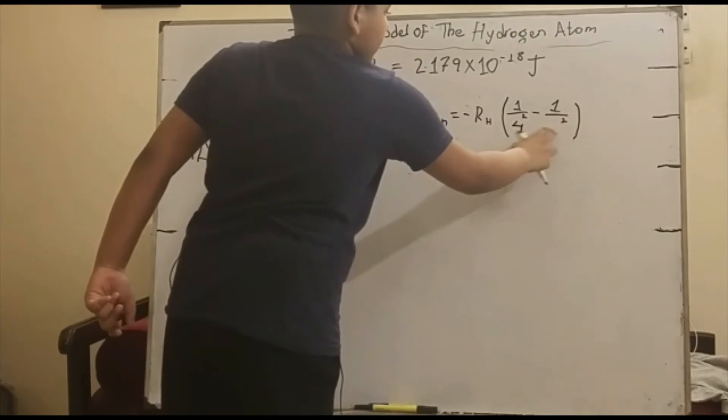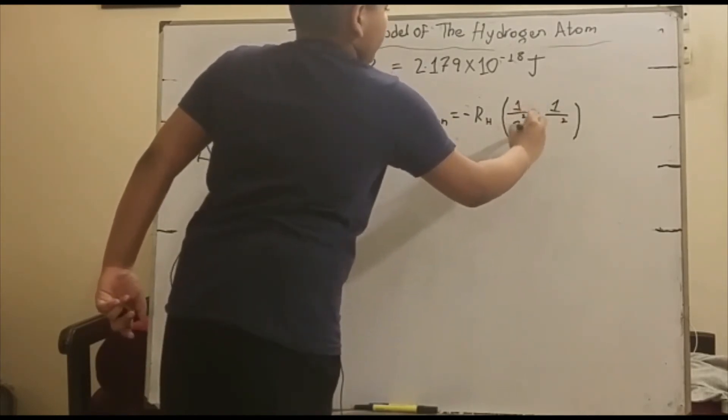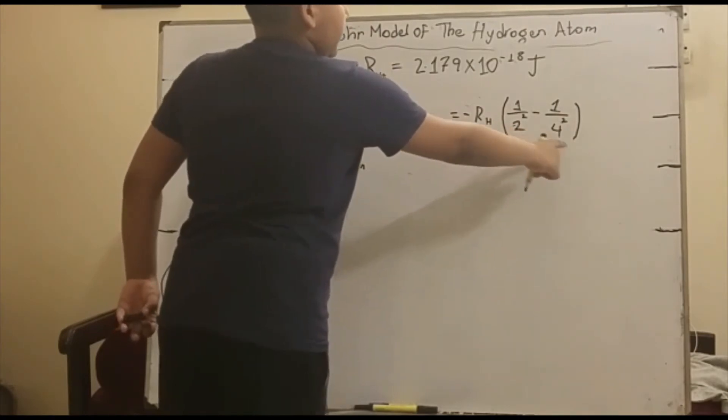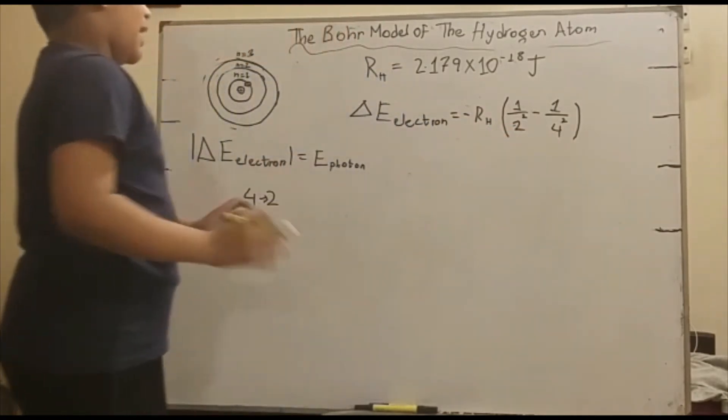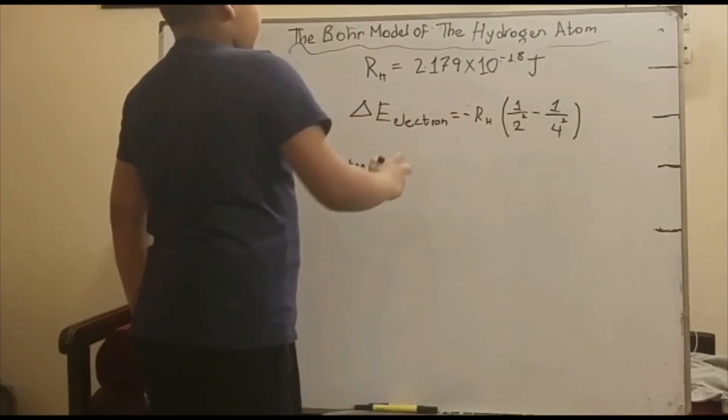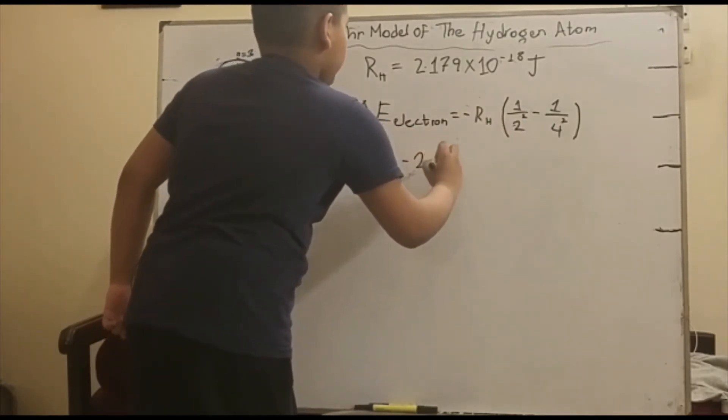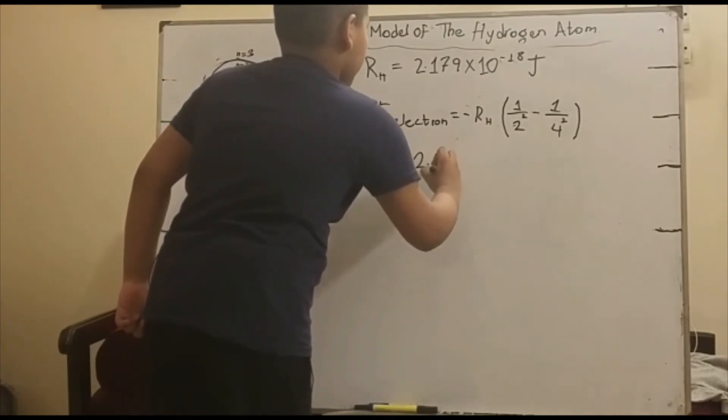Oh no, actually, this is going to be 2 and this is going to be 4. It would be n final and n initial. My bad. So when we have done that, we can evaluate the Rydberg constant. Remember, there was a negative here.